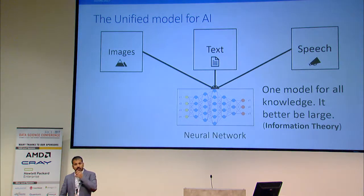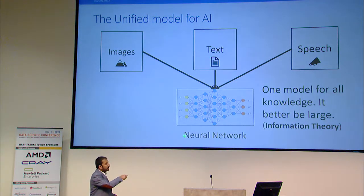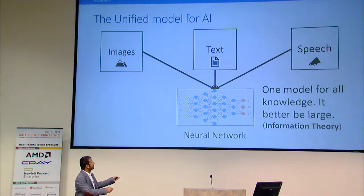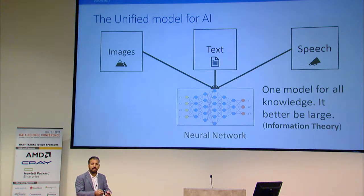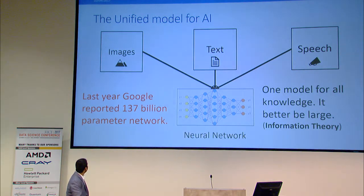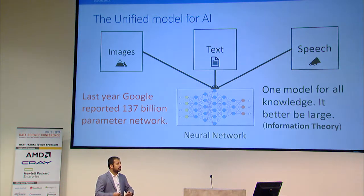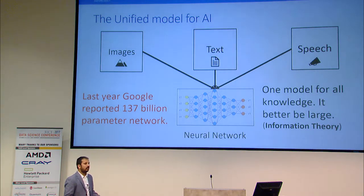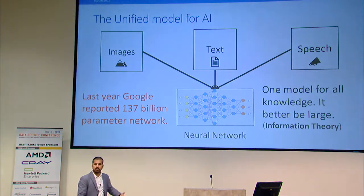From an information theory perspective, if you want one network to know all the knowledge in the world, it better be large. Basic information theory says you cannot compress all the information out there into a small network. So you need larger and larger networks, and that is consistent with what we observe — better accuracy with larger models. Last year Google reported a 137 billion parameter network. We are very good at generating lots of data, but we need a humongous model to make sense of it, and this seems to be breaking all the benchmarks.